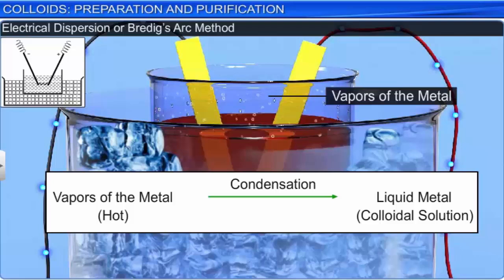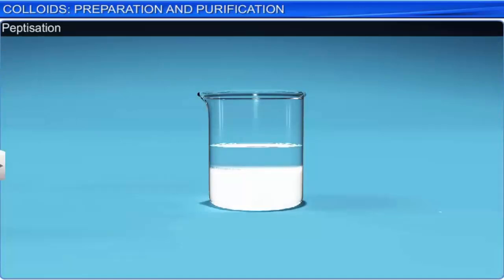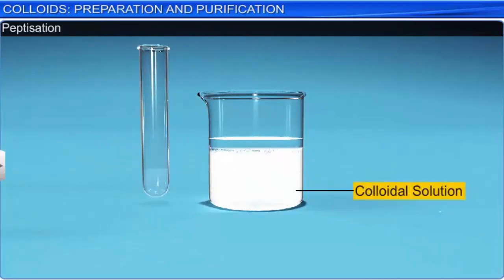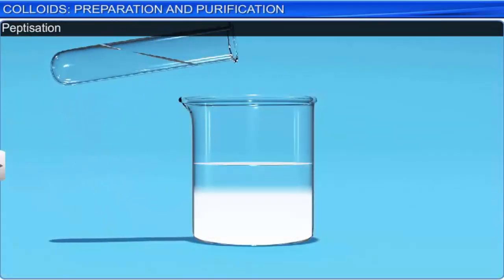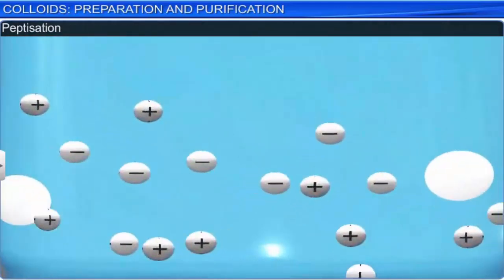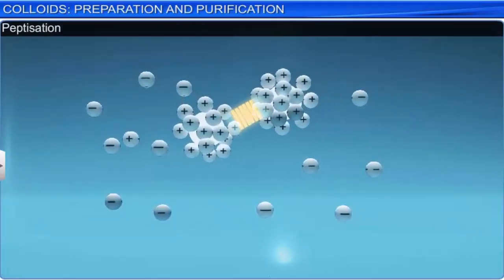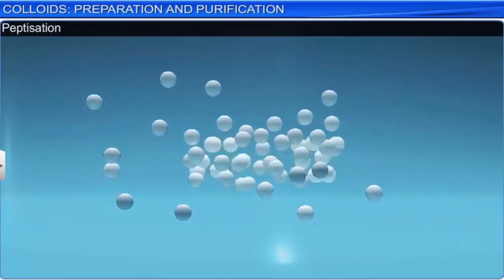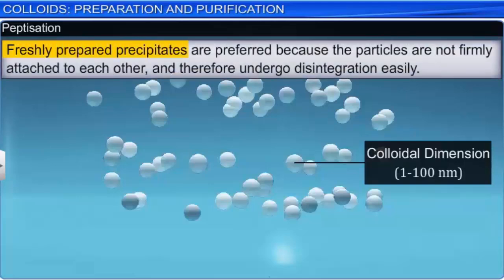We will now discuss the preparation of salts by the peptization method. Peptization is defined as the process of converting a freshly prepared precipitate into colloidal form by adding a small amount of a suitable electrolyte. The electrolytes used for this purpose are called peptizing agents. This process involves the preferential adsorption of suitable ions from the electrolyte by the particles of the precipitate to form charged species.